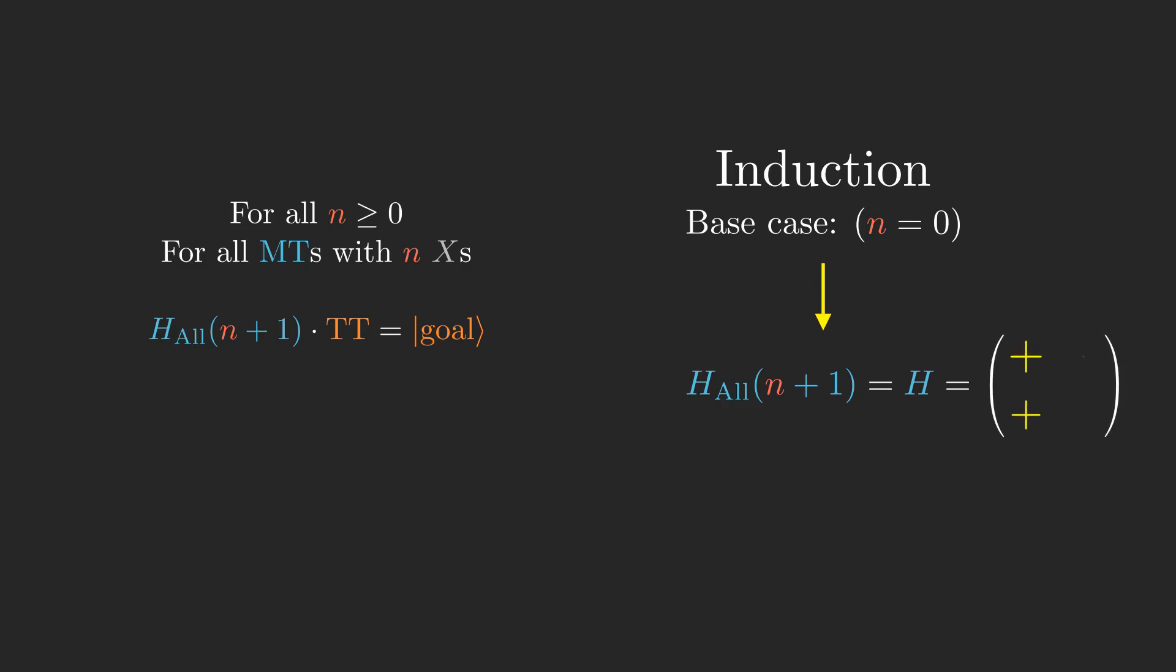H all of n plus 1 here is just h, the regular hadamard matrix for one qubit. The truth table state tt here is plus minus, because if answer is originally 0, then it stays at 0, and if answer is originally 1, then it stays 1.